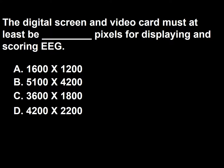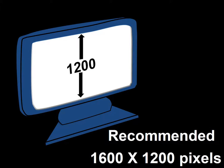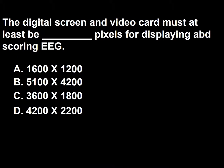Next question: The digital screen and video card must have at least how many pixels for displaying and scoring EEG? A, 1,600 by 1,200; B, 1,500 by 4,200; C, 3,600 by 1,800; D, 4,200 by 2,200. A computer used for EEG must have at least 1,200 vertical pixels and 1,600 horizontal pixels. So the answer to this question is A.